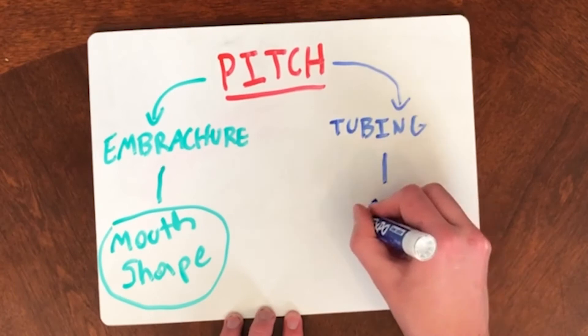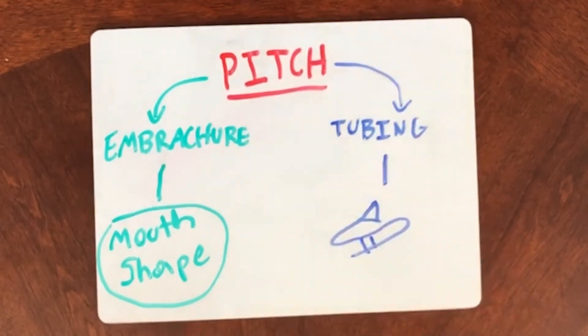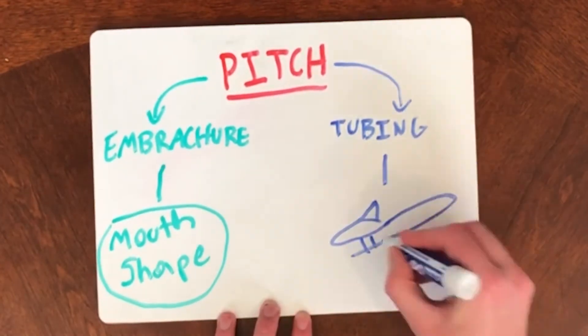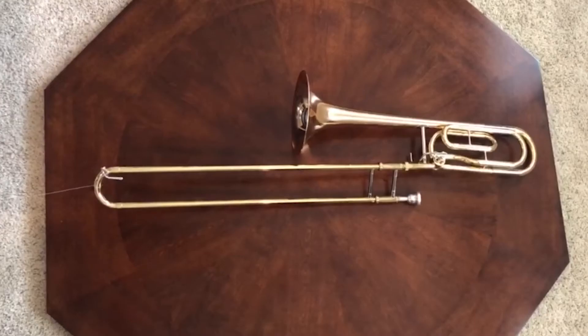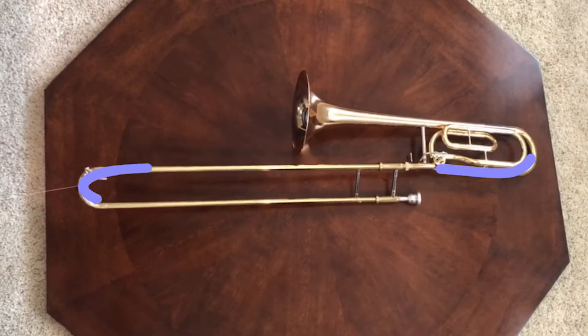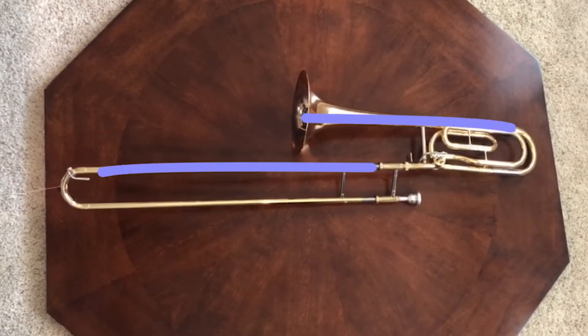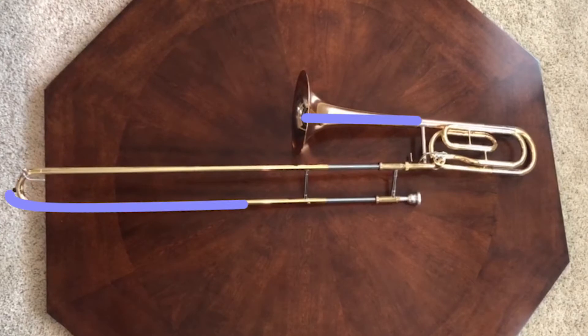The other way to change the frequency is by changing the length of tubing that the air travels through, all the way from the mouthpiece to the bell at the end of the trombone. The main way to alter the length of the trombone's tubing is to use the slide. Pushing the slide further away will create more tubing and therefore slower frequencies and lower pitches.